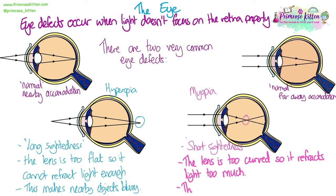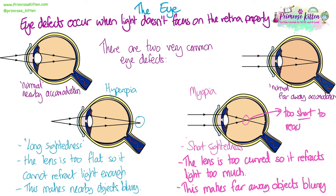With myopia, or short-sightedness — which I have — the lens is the opposite: it's too curved. We're good at seeing objects close up, but for far away objects, the lens refracts the light too much and the focus point ends up in about the middle of the eye, nowhere near the retina. So this makes far away objects appear blurry.